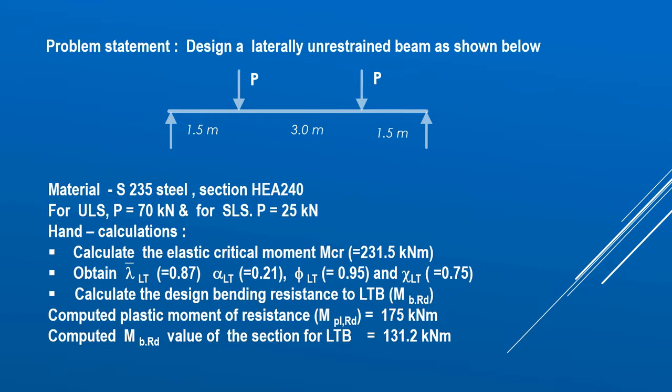The problem statement used in this tutorial is as follows: we have a laterally unrestrained beam of span 6 meters that carries a concentrated load of value P at a location 4.5 meters from the support. The section to be verified is the GA240, material is S235. For the ultimate limit state, P is 70 kN, and for the serviceability limit state, P is 25 kN.